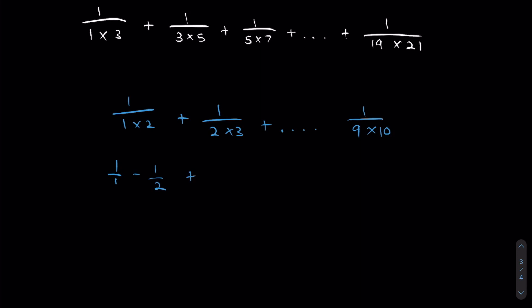Similarly, 1 over 2 times 3 can be split into 1 over 2 minus 1 over 3. So on and so forth, we'll get 1 over 3 minus 1 over 4, all the way until our last term, which is plus 1 over 9 minus 1 over 10.